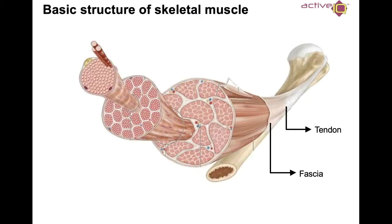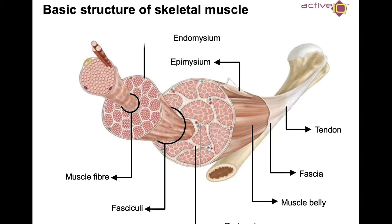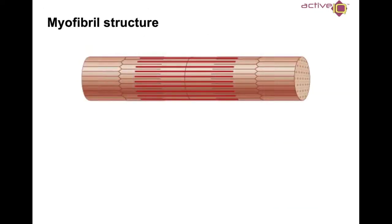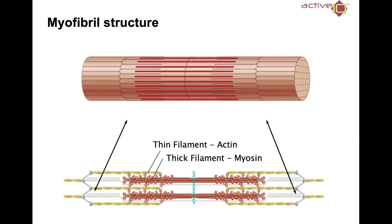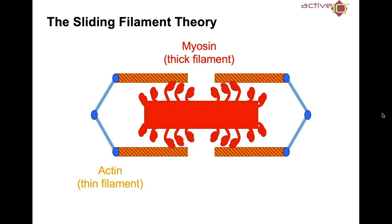As you can see from the diagram, here's the basic structure of skeletal muscle. You've got the tendon and the fascia around the outside, the muscle belly itself, the epimysium, the fascia, the perimysium, the muscle fibre, the endomysium, and the myofibril. These myofibrils break down further into the sarcomere, which then breaks down into thin filaments such as actin and thick filaments such as myosin. The myosin and actin form what we know as the sliding filament theory, as shown in the diagram, which illustrates muscle contraction.